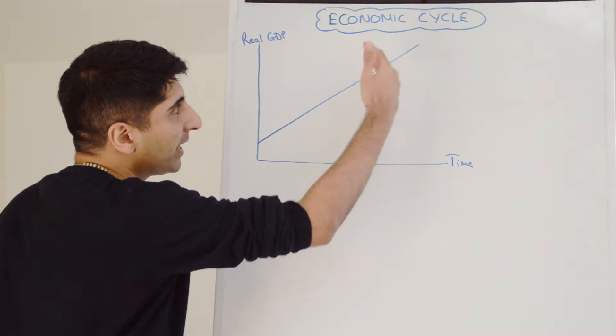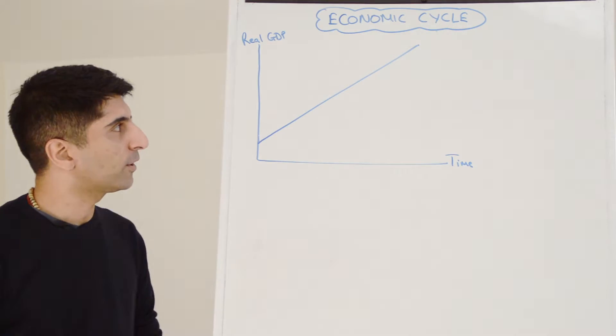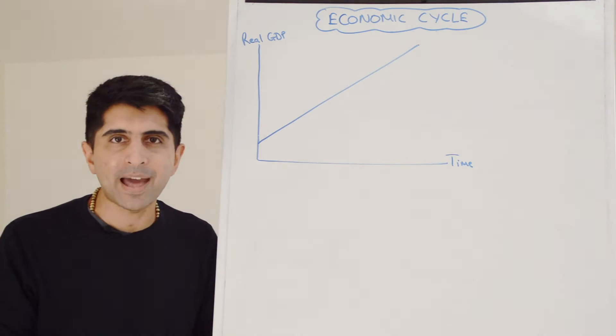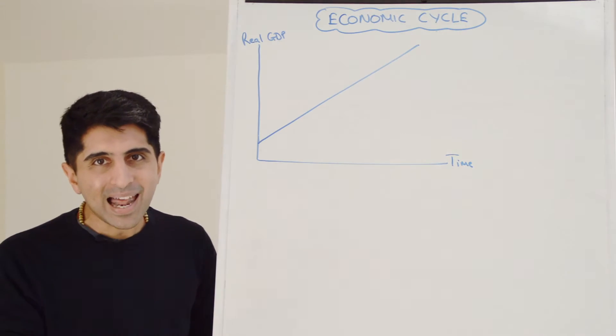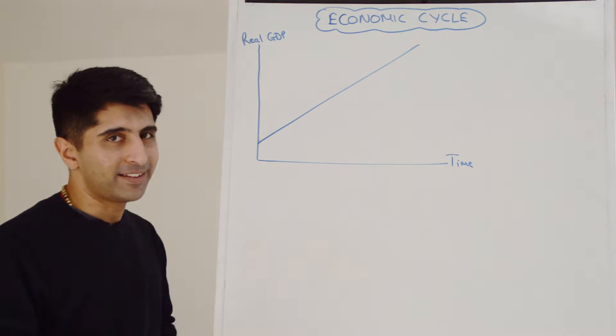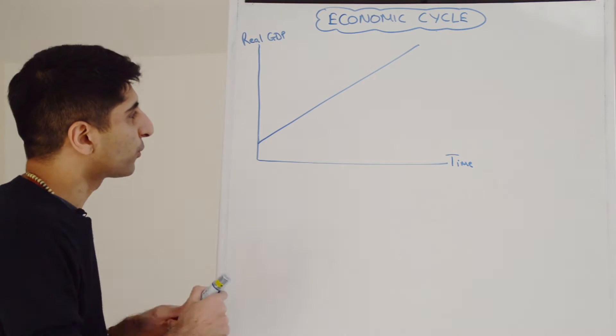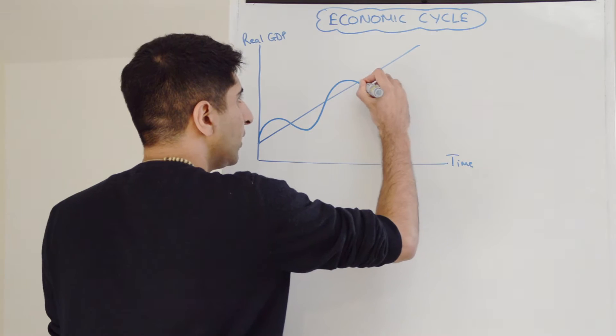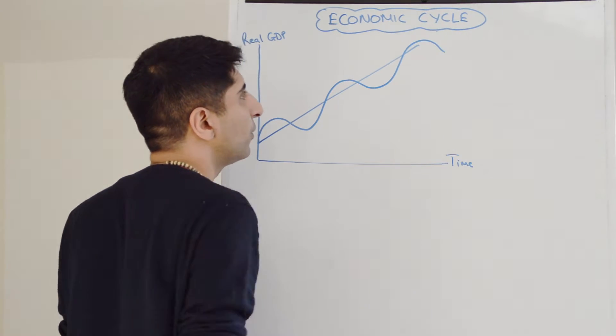And that line there represents strong and sustained economic growth, continuous economic growth in a lovely, smooth, upward-sloping manner. However, reality differs very much from this. In reality, actual growth looks more like this. There are times where it increases, but also times where it falls, and increases, and falls, and increases, and falls.